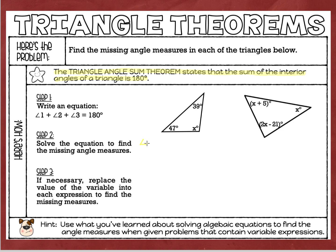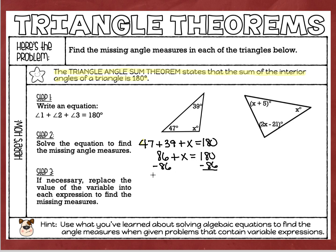The third angle is the one we need to figure out. Setting up my equation: the 47 degree angle plus the 39 degree angle plus whatever that last angle is all have to equal 180 degrees. Then we solve this equation. I can add 47 plus 39 together, which gives me 86. Bringing down: 86 plus x equals 180 degrees. To solve this one-step equation, I'm going to subtract 86 from each side, and that gives me x equals 94.